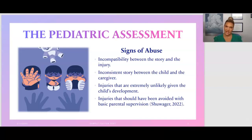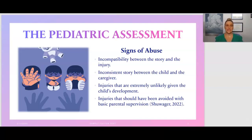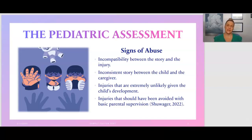Inconsistent stories between the child and the caregiver — where the child describes being hurt one way and the parent another way — are also a sign of abuse. Other signs include injuries that are extremely unlikely given the child's development, and injuries that should have been avoided with basic parental supervision. For example, in the emergency room we often see children burned by candles or hot wax — a toddler moving around the home can easily pull a candle down and burn themselves.